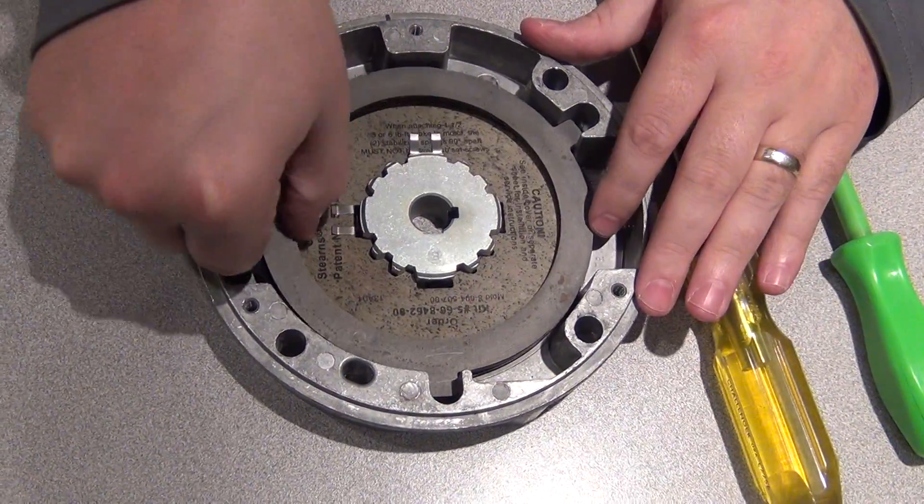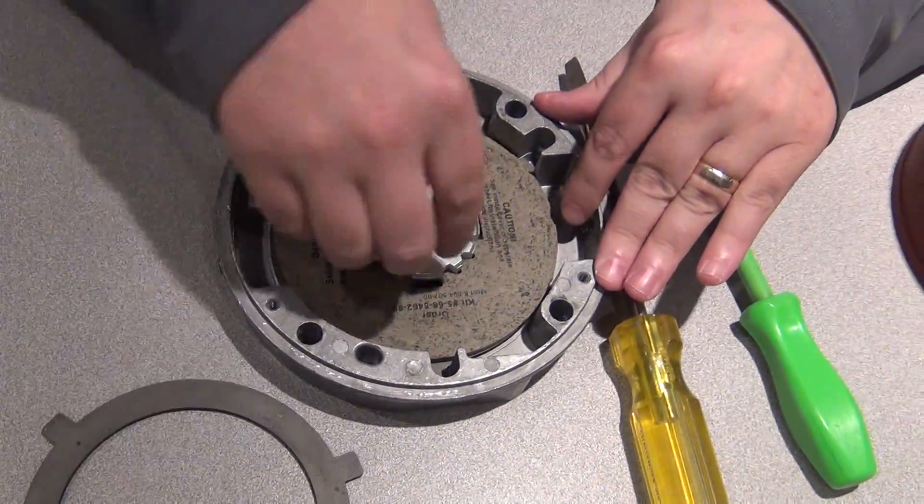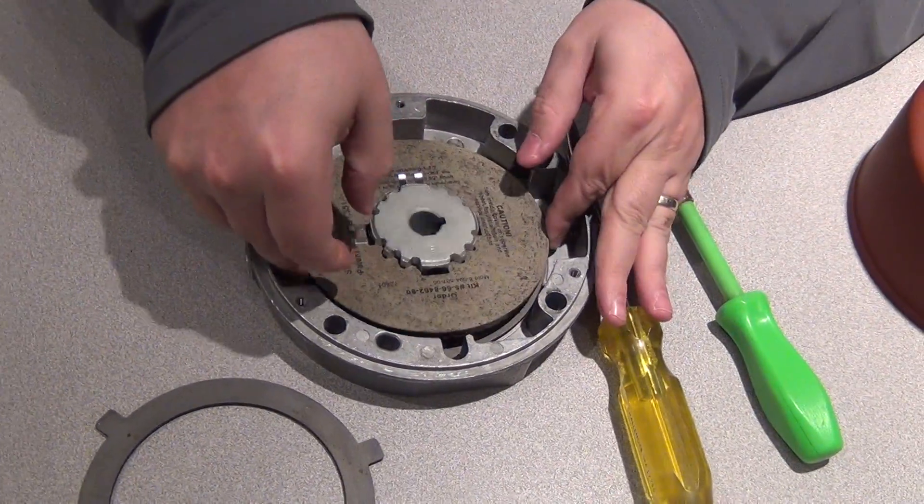Okay, now you have the stationary disc. You want to pull that out and set that aside, and then you want to pull out the friction disc.